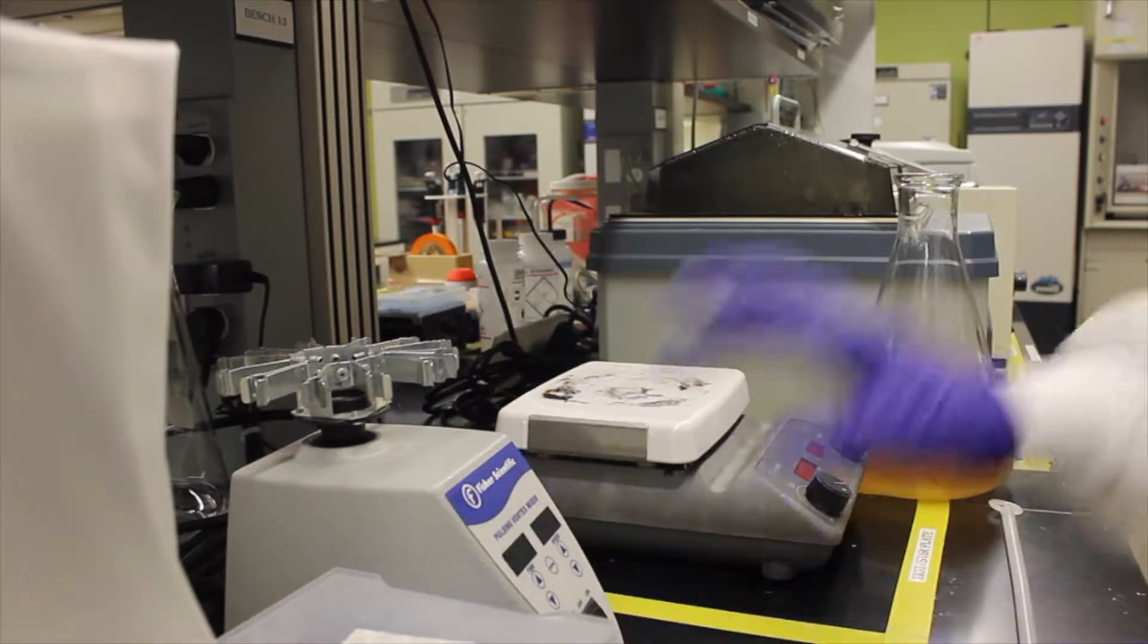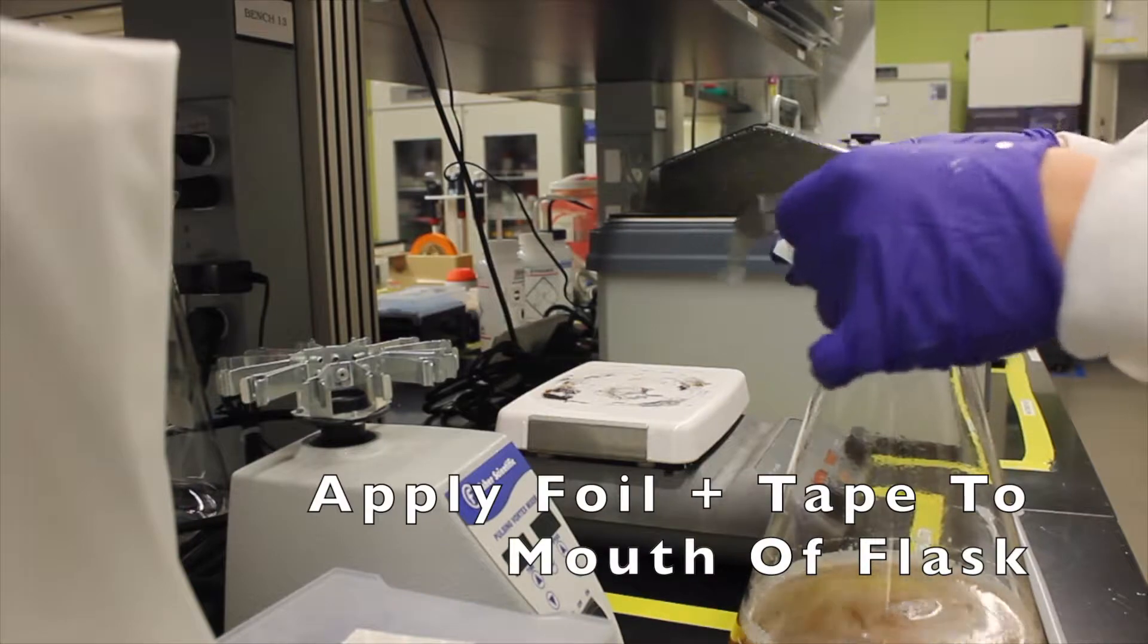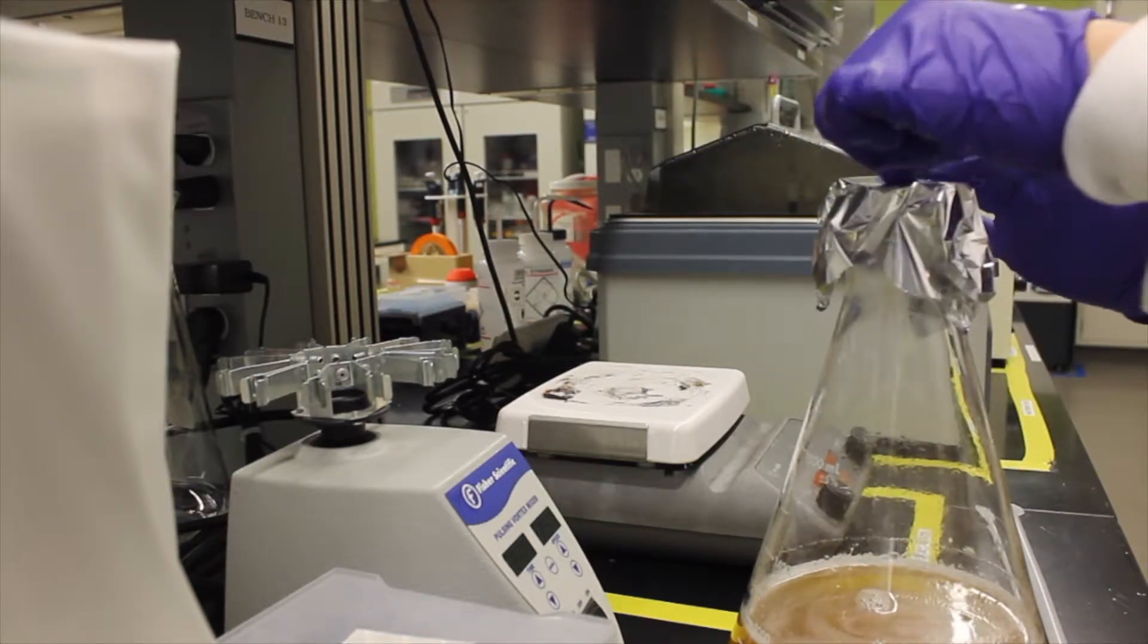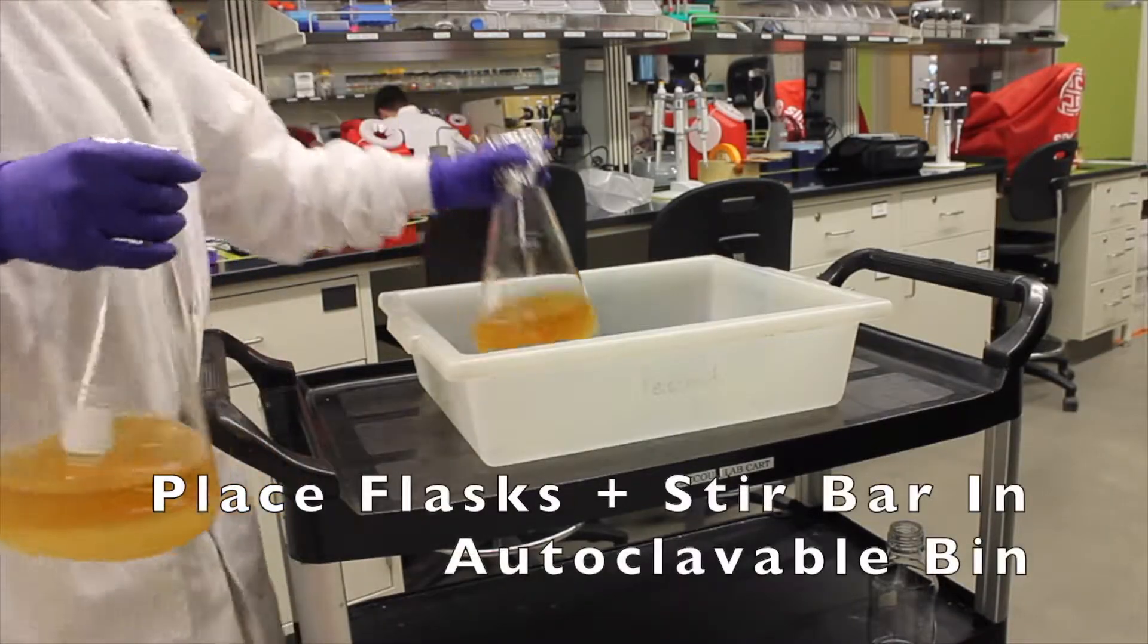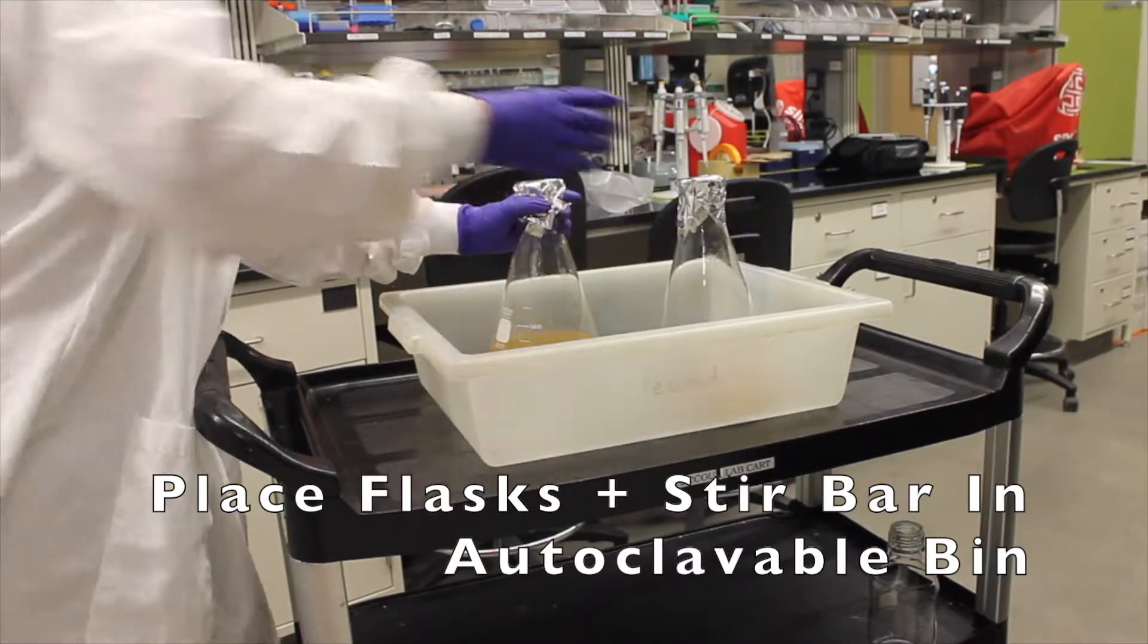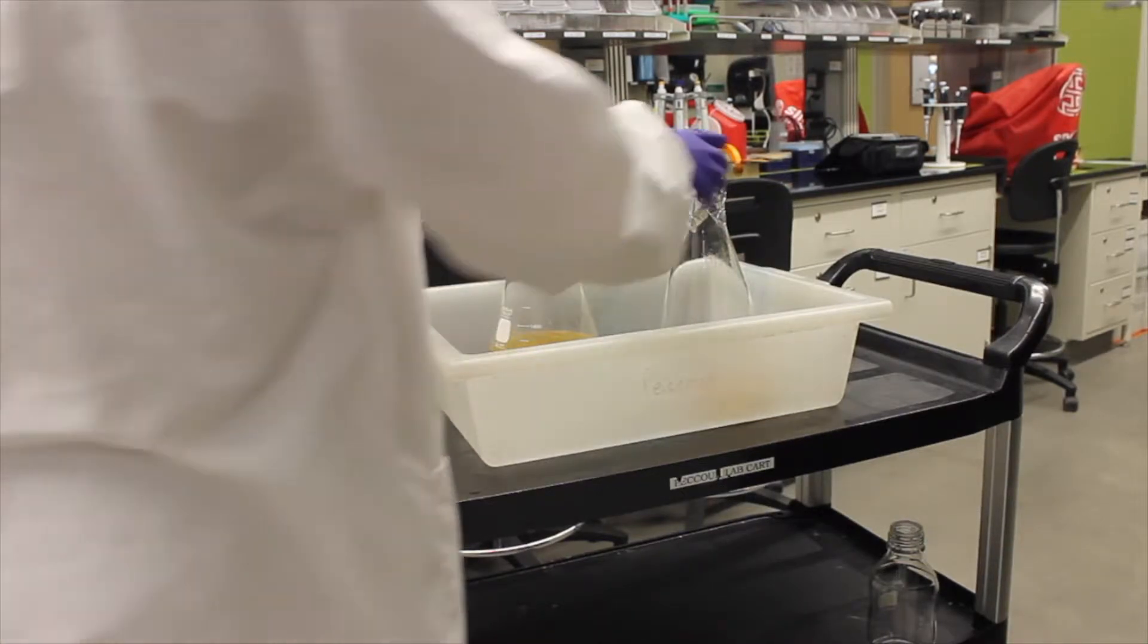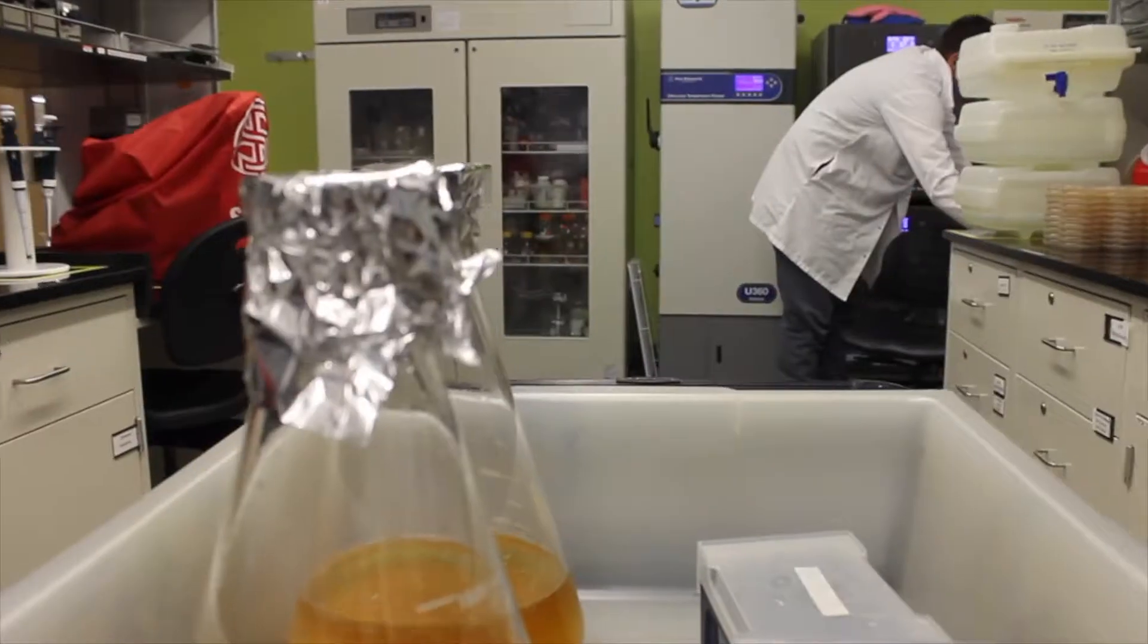We're going to put foil on top of our flask and add autoclave tape to the top of the foil. Now, we're going to put all of our media into an autoclavable bin as well as the stir bars and wheel it to the autoclave.